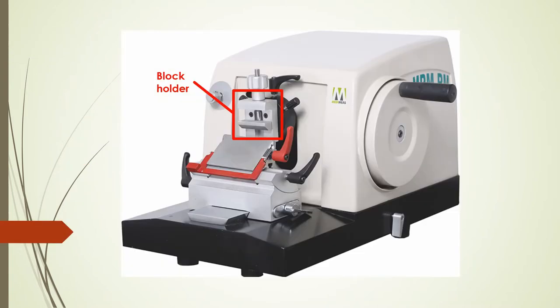Here we have a picture of the block holder. As the name suggests, it just holds the block in place. It kind of looks like an adjustable clamp, wherein you can fit the tissue block inside. But not all of the tissue block — part of the tissue block has to be exposed for the knife to cut it.